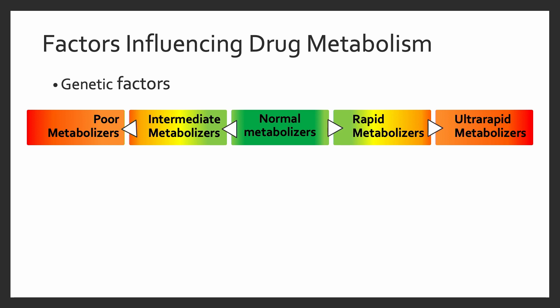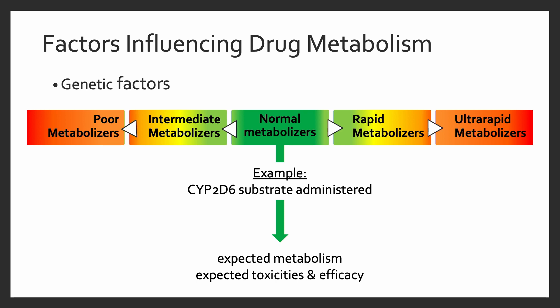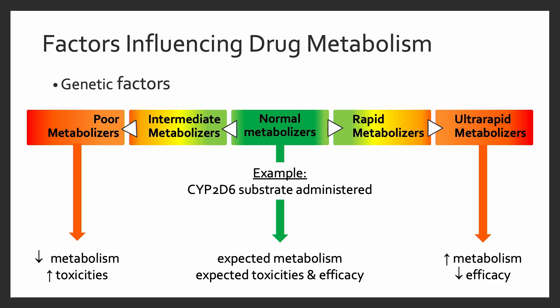Since discovering cytochrome P450 in the 1950s, we've learned that many variables impact drug metabolism, including genetic factors. A specific gene encodes a specific enzyme involved in metabolism. For a normal metabolizer given a CYP2D6 substrate, we anticipate standard metabolism, expected toxicities, and anticipated efficacy. A poor metabolizer given the same drug at the same dose may show decreased metabolism and more toxicities than expected. On the other end of the spectrum, ultrarapid metabolizers metabolize drugs too quickly, potentially leading to decreased efficacy and therapeutic failure.